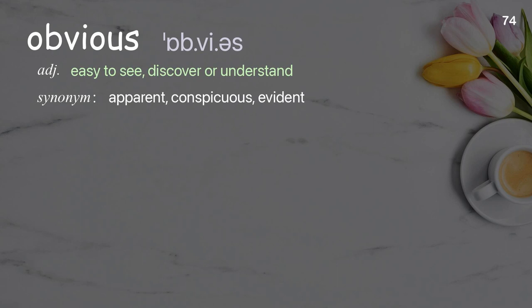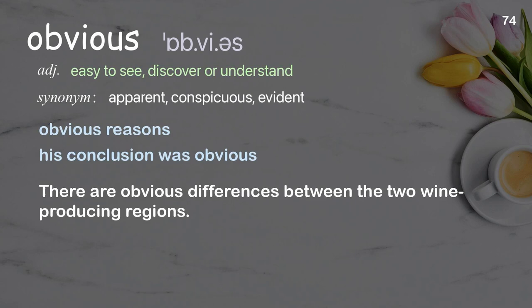Obvious: easy to see, discover, or understand. Examples: obvious reasons; his conclusion was obvious. There are obvious differences between the two wine-producing regions.